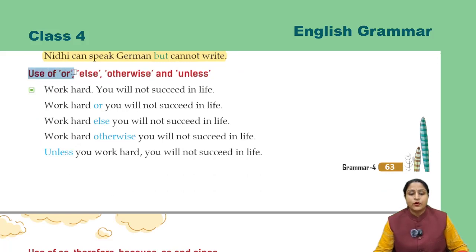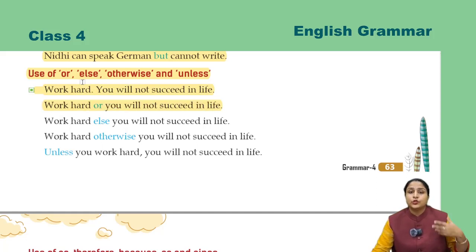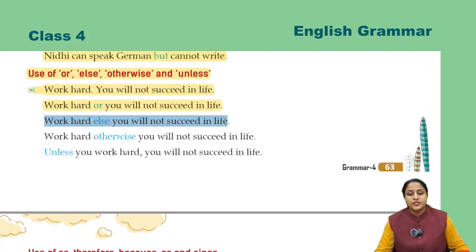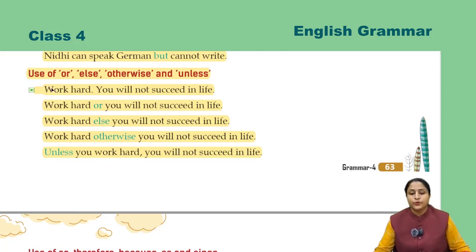Next, use of 'or', 'else', 'otherwise', and 'unless'. Work hard, you will not succeed in life. In ko kaisi join karate hain: Work hard or you will not succeed in life. Ya toh mehnat karo, verna tum safal nahi ho paoge. Work hard, else you will not succeed in life. Work hard, otherwise you will not succeed in life. Unless you work hard, you will not succeed in life — matlab, jab tak tum mehnat nahi karoge, tab tak tum safal nahi honge.